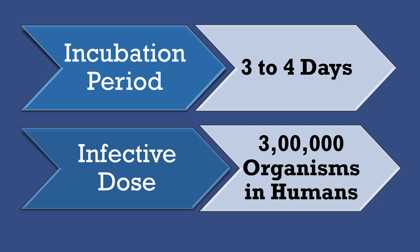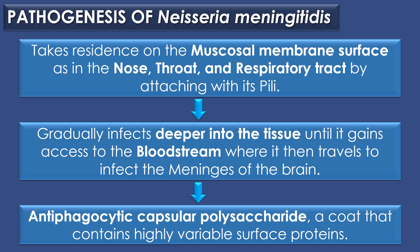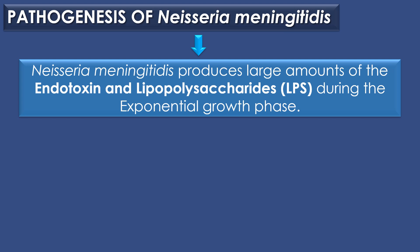The incubation period for Neisseria meningitidis infection is 3 to 4 days, and the infective dose required for causing infection is 300,000 organisms in humans. Regarding pathogenesis, Neisseria meningitidis first takes residence on the mucosal membrane surface of the nose, throat, and respiratory tract by attaching with its pili. It then gradually infects deeper into the tissues until it gains access to the bloodstream, where it travels to infect the meninges of the brain. It produces an antiphagocytic capsule polysaccharide and large amounts of endotoxins and lipopolysaccharides during the exponential growth phase. People with weakened immune systems are at great mortality risk, which is why most victims are children.